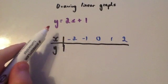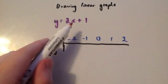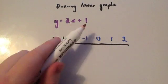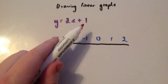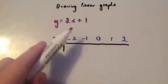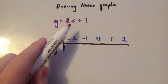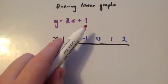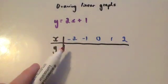This means the y number is 2 times the x number plus 1. So we're going to multiply all of these x values by 2 and then add 1, and that will give us the y number.